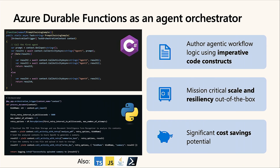When you write agent orchestrations using Durable Functions, you do so using normal imperative code — if-else, try-catch, while-loops — the things you as a developer are already used to. This means you can author the logic using the IDE of your choice, the language of your choice, with breakpoints, treating it as a normal application — which you don't get with a DSL or declarative syntax. We support many popular languages. And distributed agentic workflows are a built-in feature: you can run thousands of parallel agentic workflows across hundreds of VMs, and we take care of scale automatically.